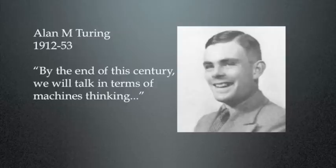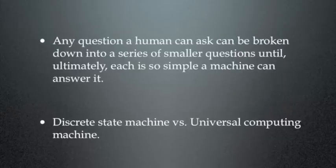Now, Turing's approach, and remember of course that his work in Britain was, to a fair extent, being mirrored in the US by John von Neumann, who was a Hungarian-born mathematician. And Turing said, any question a human can ask can be broken down into a series of smaller questions until ultimately each of the little questions is so simple that a machine can answer it. And he developed the concept of what he called the discrete-state machine, and from that came the universal computing machine.